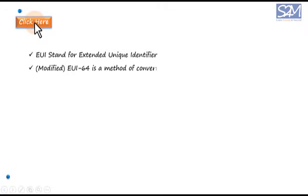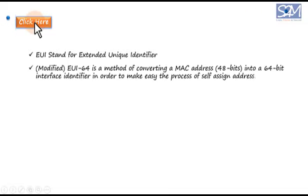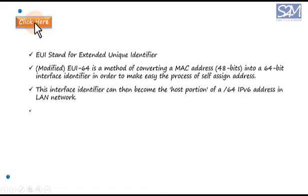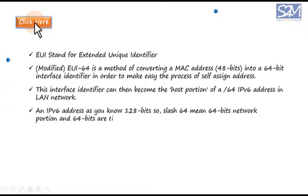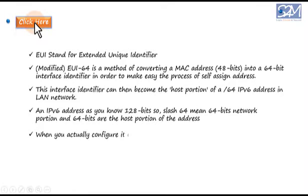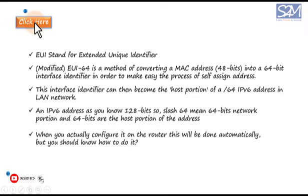EUI stands for Extended Unique Identifier. Modified EUI-64 is a method of converting a MAC address (48 bits) into a 64-bit interface identifier, in order to make easy the process of self-assigning an address. This interface identifier becomes the host portion of a /64 IPv6 address. An IPv6 address is 128 bits, so /64 means 64 bits for the network portion and 64 bits for the host portion.